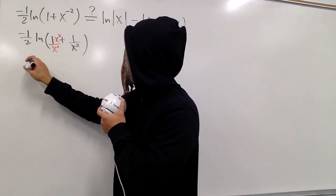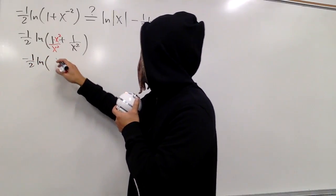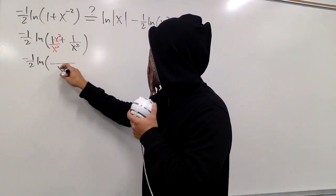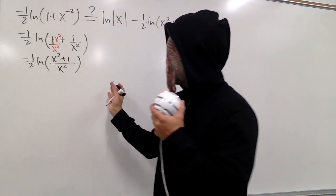And then we will just have negative 1 half ln. Ln, parentheses, now we can just add them together. Well, we have x squared on the bottom. On the top, it's just x squared plus 1, like this.